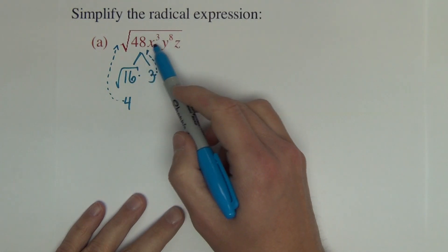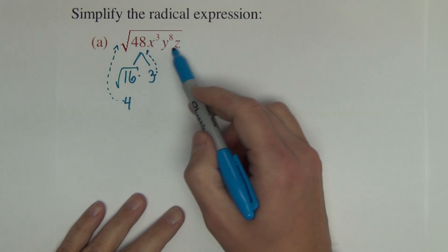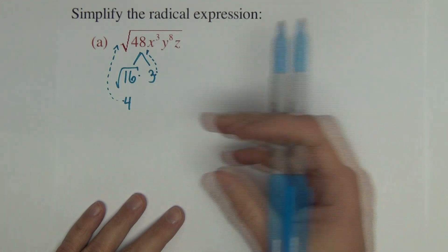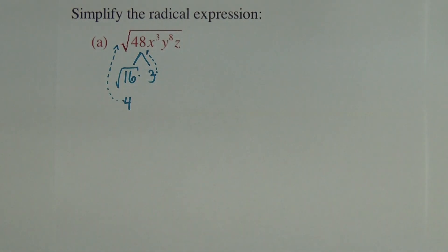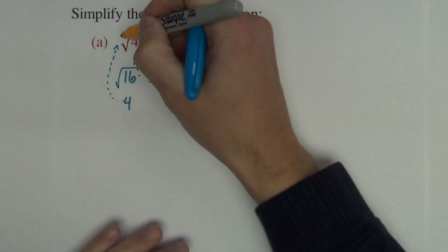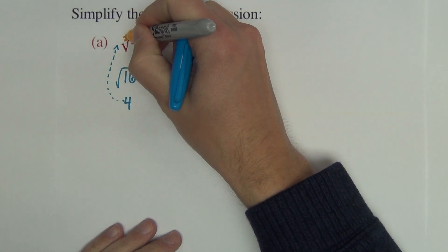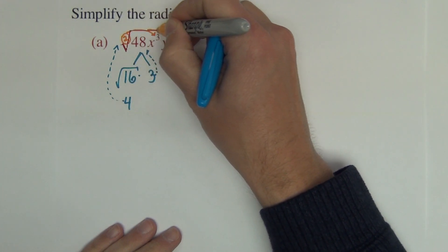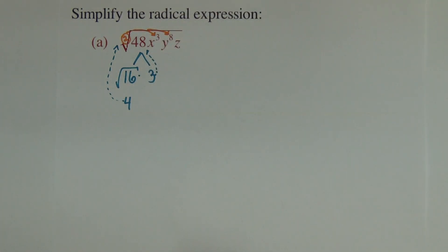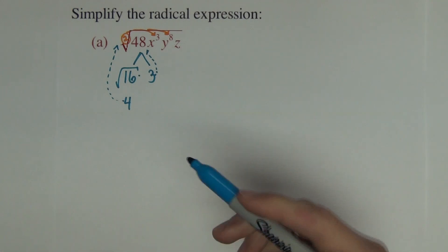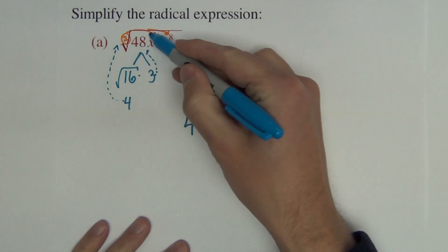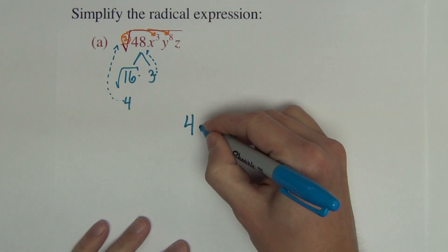And then with the exponents, or with the variables on the exponents, or the variables, sorry, we're taking out. And recall that we do this in such a manner that we can divide the radical index into these exponents. And how many times they go in is what's coming out. So here we go. The 4 is on the outside.